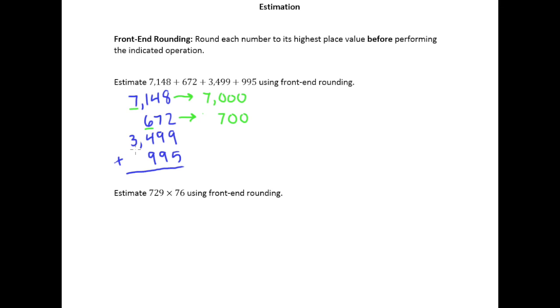For 3,499, the thousands place is my highest place value. That's my rounding digit. The test digit in this case is 4, so that means leave it as a 3 and zero everything else out.